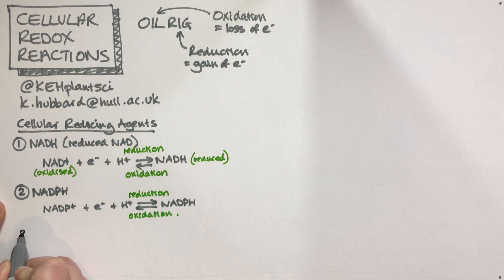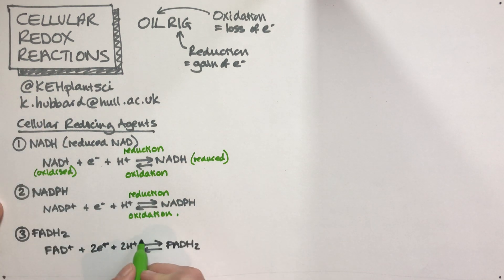The other one that we have that is not very commonly used but does come up in the Krebs cycle is FADH2. There we have FAD + 2e- + 2H+ → FADH2. Again, we're gaining some electrons, so that's a reduction reaction. In this direction, we're losing electrons, so that's oxidation.